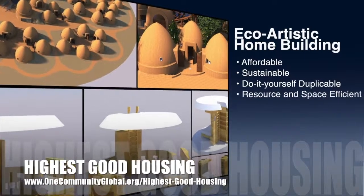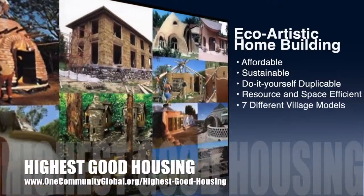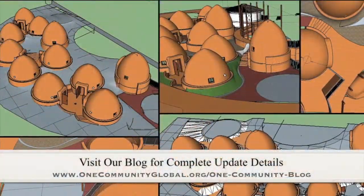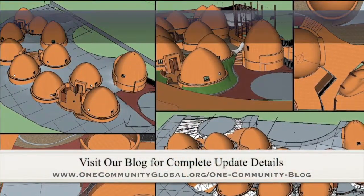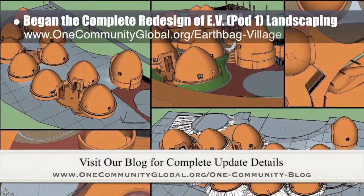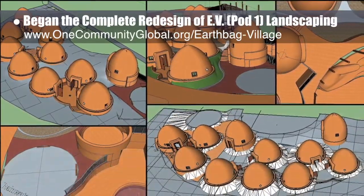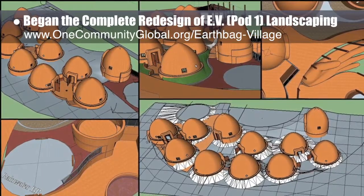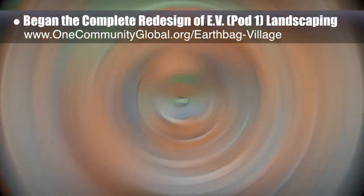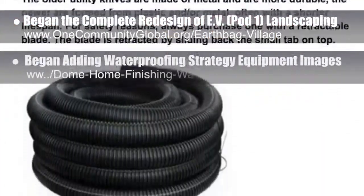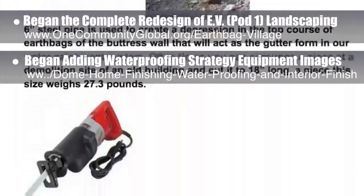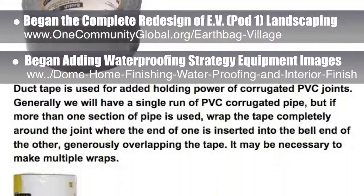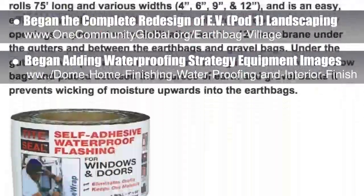The One Community approach to Highest Good Housing is eco-artistic home building that is affordable, sustainable, do-it-yourself, duplicable, resource and space efficient, and consists of seven different sustainably constructed village models. This week, the core team working on Highest Good Housing began the complete redesign of the Earthbag Village Pod 1 landscaping after changing the structural design of the Net Zero bathrooms. This work is about 50% done.